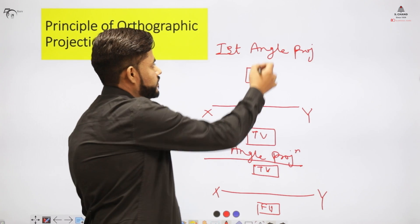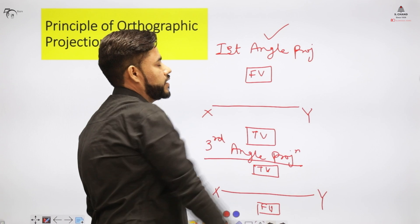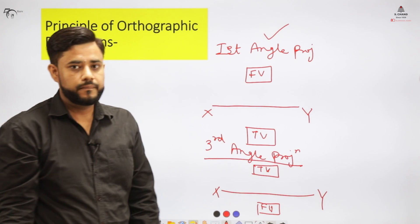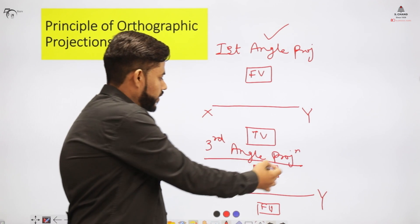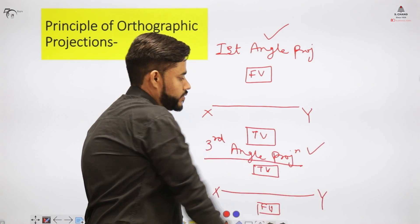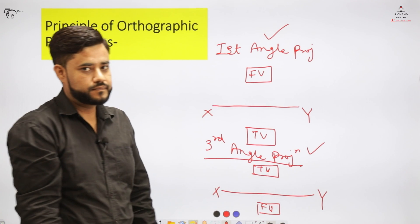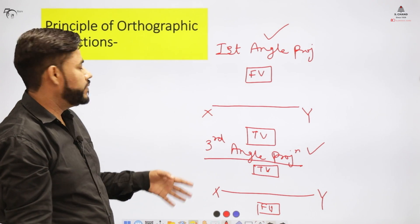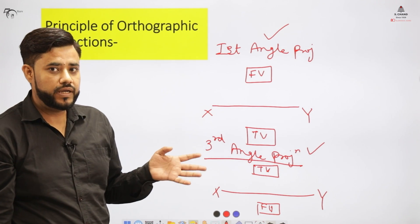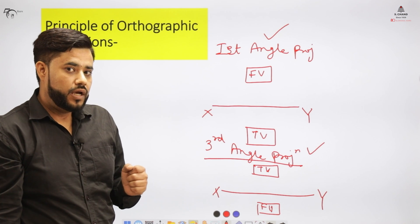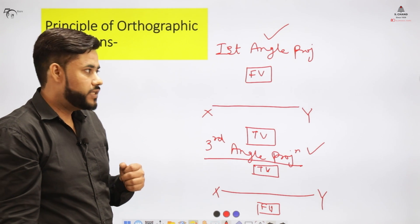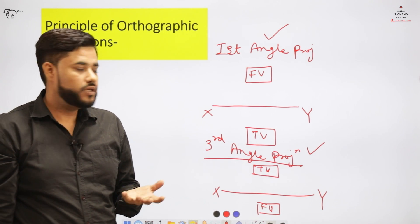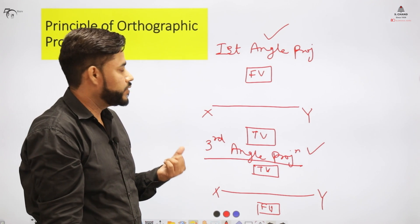In India, where the metric (mm) system is used, we generally use first angle projection. In foreign countries, third angle projection is commonly used. This is the basic concept behind orthographic projection. In the next video, I'll be covering the projection of points.